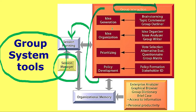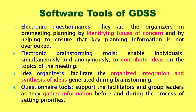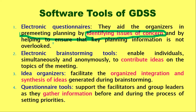Now it is time to look at all the software tools used in group decision support system meetings. Number one is electronic questionnaires. These are a way to take information from all users and all members who are going to attend the meeting. They aid the organizers in pre-meeting planning by identifying the key issues of concern. Everyone can give input, and it helps ensure that none of the key planning information is overlooked or missed.